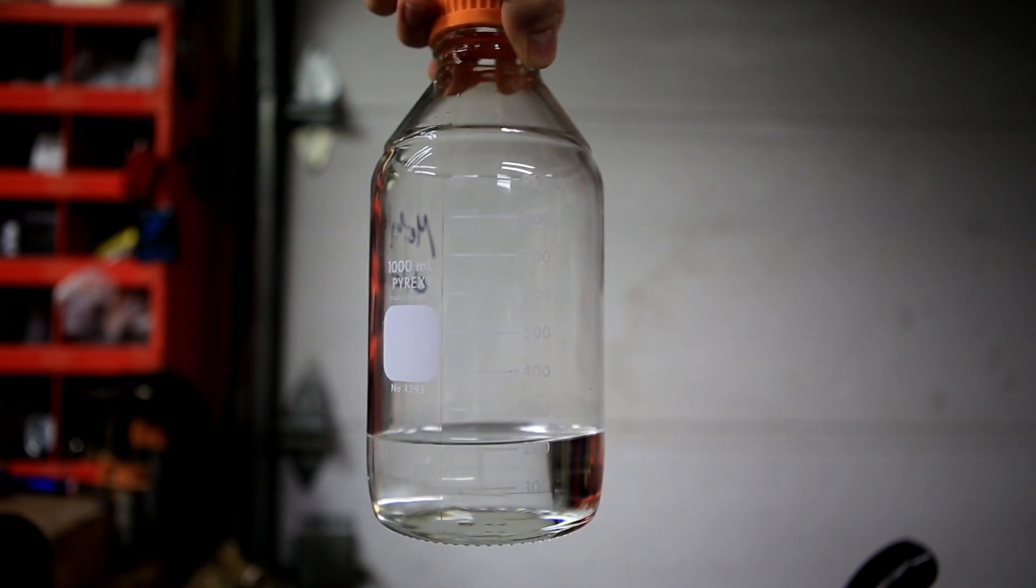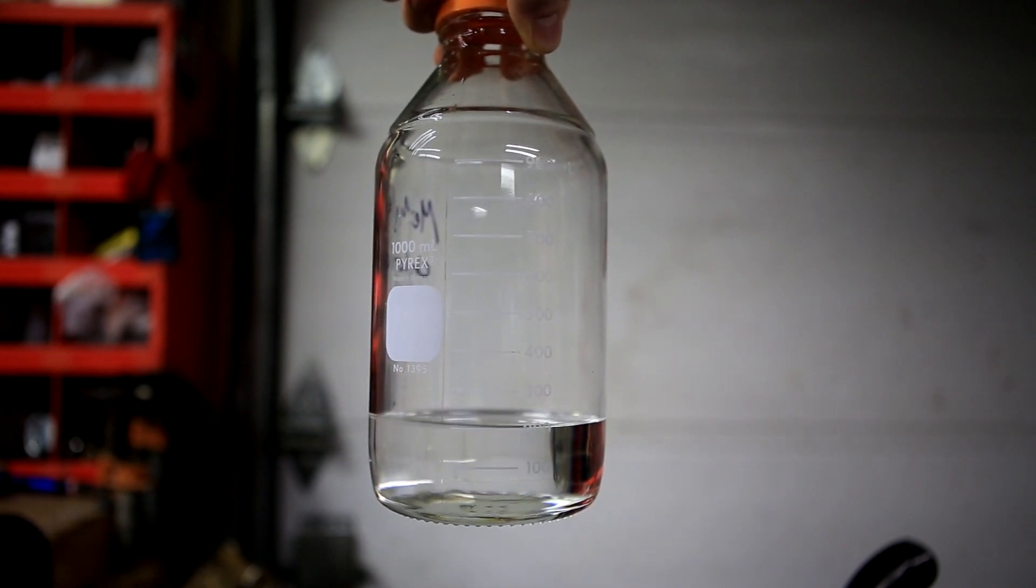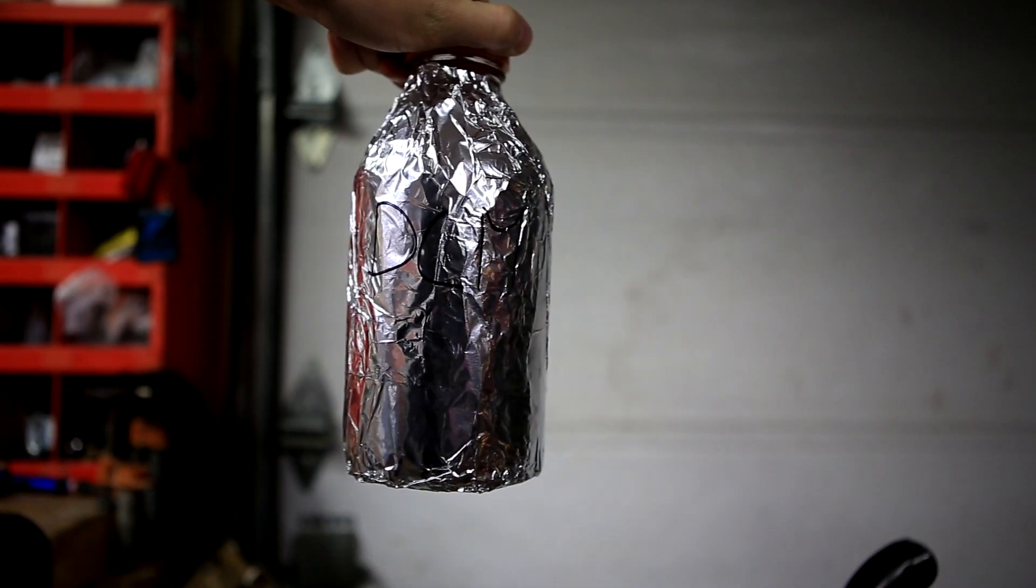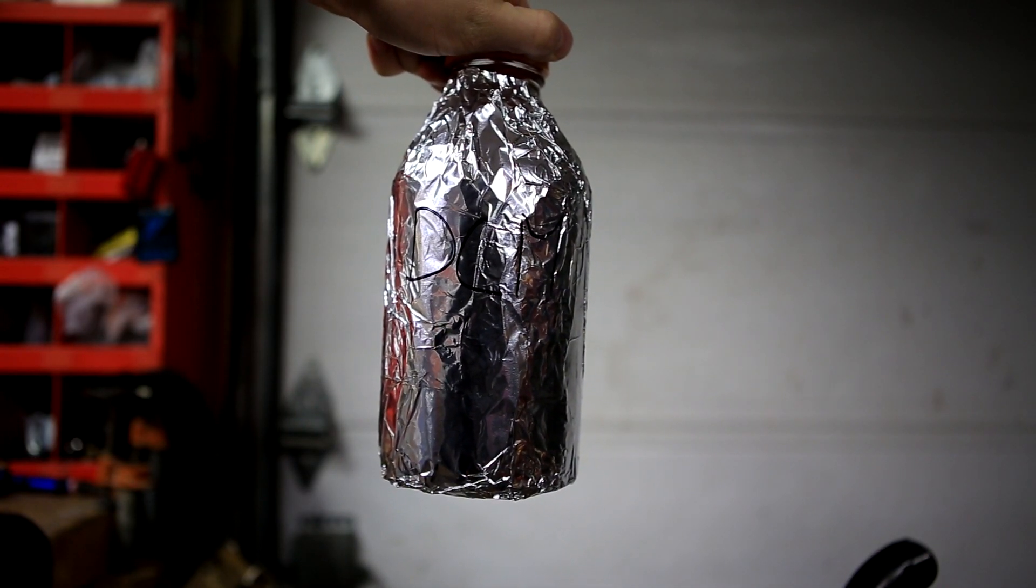In the end, I was left with about 200 ml of nearly methanol-free dichloromethane. The bottle was then wrapped in aluminum foil to protect it from light.